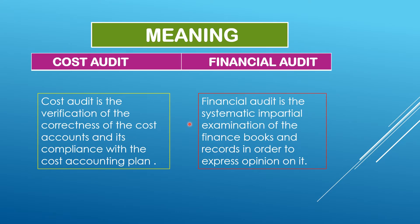The first difference relates to the meaning of the two terms. Cost audit is the verification of the correctness of the cost accounts. In cost audit, we are related to only cost accounts. The cost auditor has to check the efficiency, correctness, and verification of the cost accounts and whether they are in compliance with the cost accounting plan. But financial audit is the systematic, impartial examination of the finance books and records in order to express opinion about them.